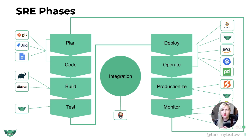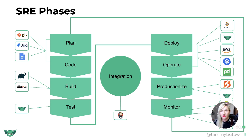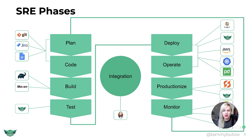There are a lot of different tools that SREs commonly use. In plan, there are tools like Git, Jira, and Google Docs for figuring out what we're going to create — same thing in code. Then we have build tools like Gradle and Maven. And then in test, we can do some chaos engineering tests with Gremlin, for example.